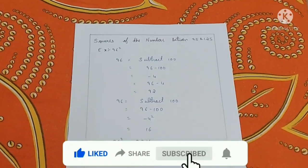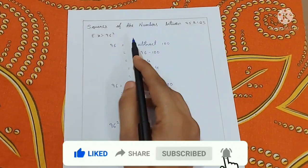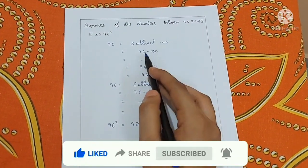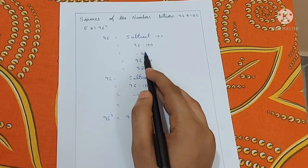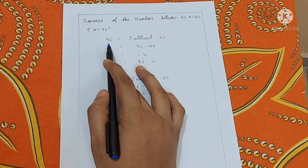Let's take one more example. 96 square. The same way, subtract it with 100. 96 minus 100 equals minus 4. In the first example, we got a positive number, so we added it. Now as we got a negative number,